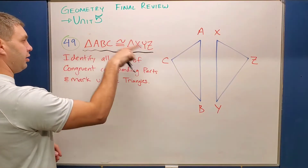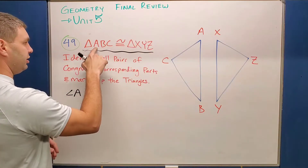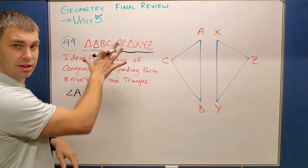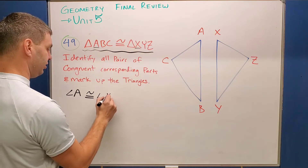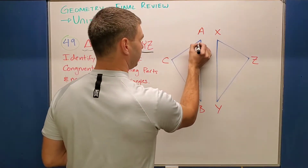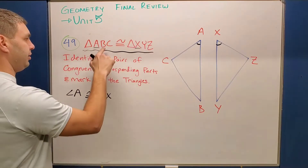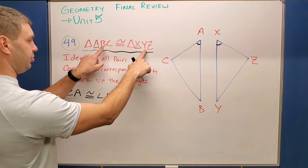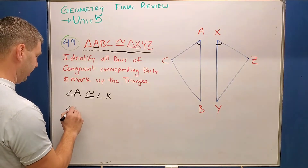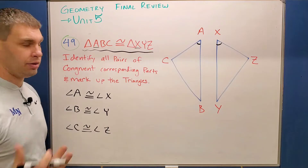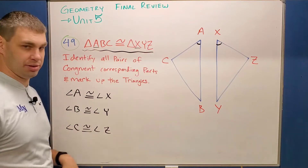There should be three angles and three side lengths — three pairs of those things that are congruent. Our congruent statement will help us out. First off, angle A is going to be congruent — that's the first one in our congruent statement — and the first one over here is angle X. So I can say angle A is congruent to angle X, and then I can mark that up in my picture. I'll give each of those one loop. B is going to be corresponding with Y and C is corresponding with Z.